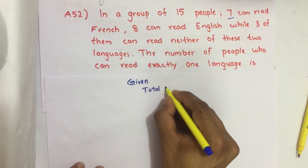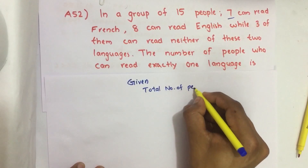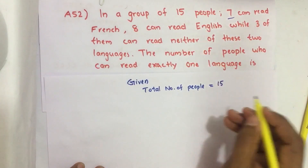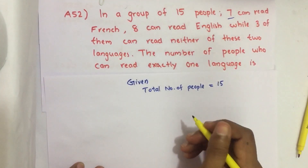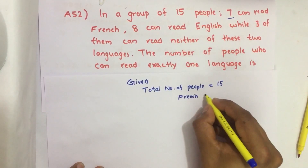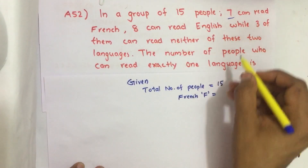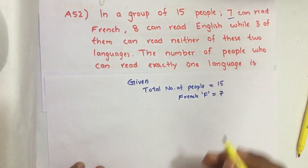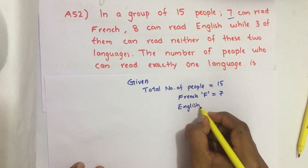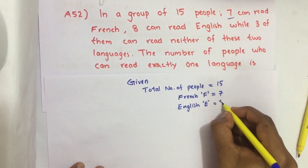Out of these 15, 7 can read French — denoting French with the letter F, the number of people who can read French equals 7. The number of people who can read English, denoted by E, is equal to 8.